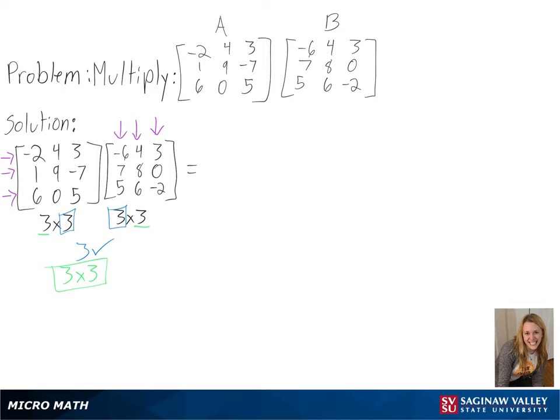To start, we will be multiplying the top row of matrix A by the columns in matrix B. So for the first column, we get negative 2 times negative 6 plus 4 times 7 plus 3 times 5.